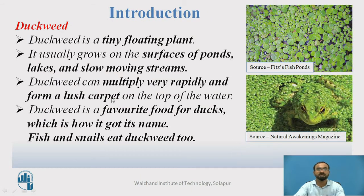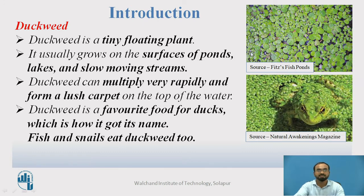Duckweed ponds are systems in which a lot of duckweed is present inside a lake. Duckweed is a tiny floating plant. As you can see in the picture, they are small plants which are continuously floating on the pond. It usually grows on the surface of ponds, lakes, or slow-moving streams. Duckweed can multiply very rapidly and form a lush carpet on top of the water. Duckweed is a favorite food for ducks, which is how it got its name.